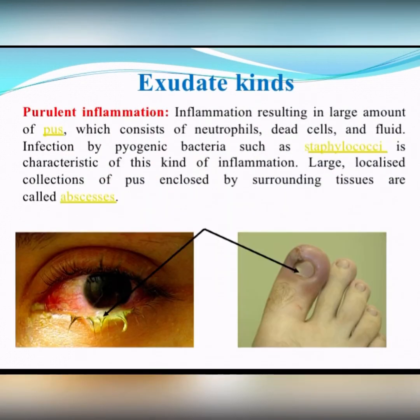Purulent inflammation: inflammation resulting in large amounts of pus, which consists of neutrophils, dead cells, and fluid. Large localized collections of pus enclosed by surrounding tissues are called abscesses.